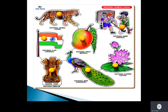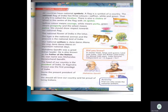Now let us recall our national symbols. Our national animal is the tiger. Our national flag is the Tiranga. Our national game is hockey. Our national fruit is mango. Our national bird is the peacock, and our national flower is the lotus. This is our national emblem. The lotus is the national flower, the tiger is the national animal, and the peacock is the national bird.